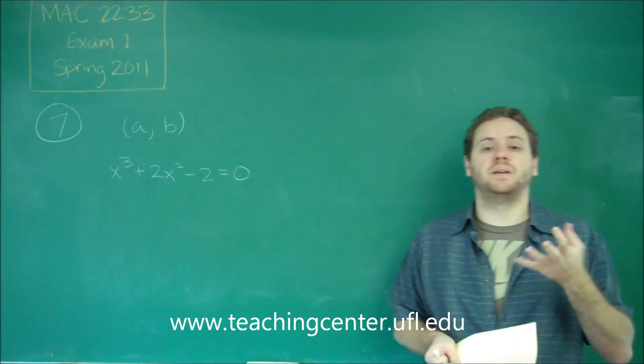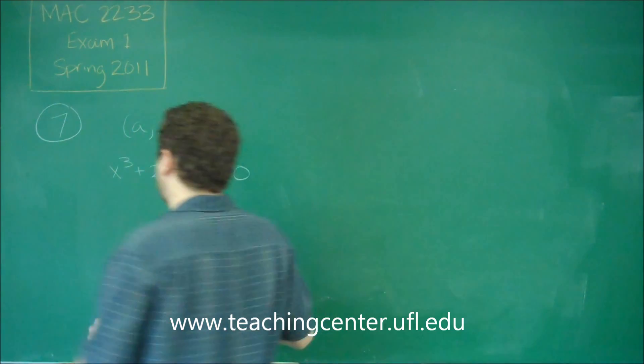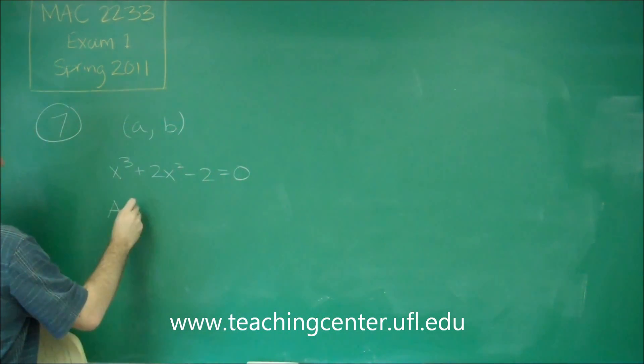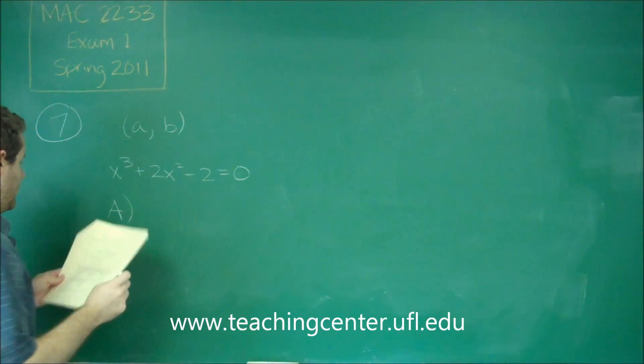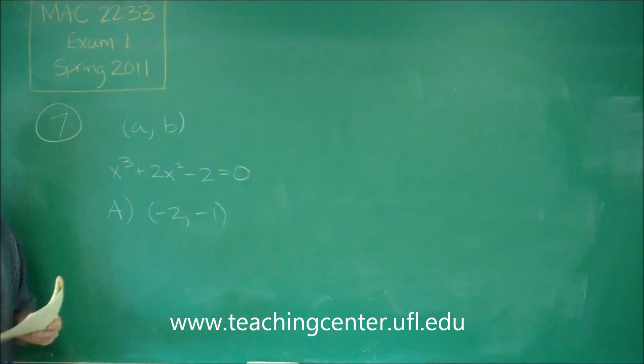If zero is in between two things, that means one is positive and one is negative. So let's check those out. So let's try them in order. So answer choice A, we have the interval negative two to negative one. So let's plug in negative two, let's plug in negative one to our function and see what happens.